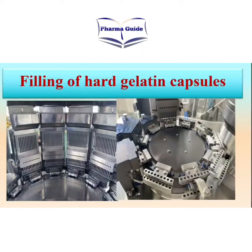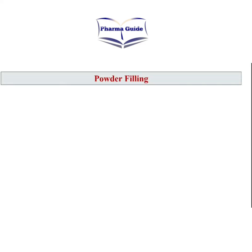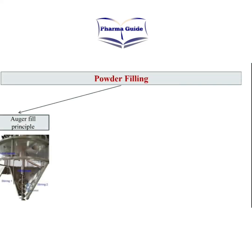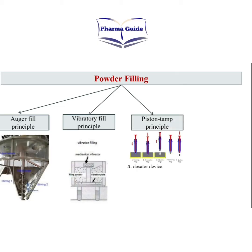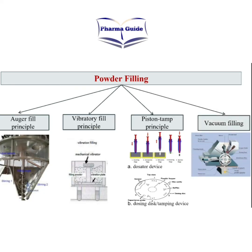Hello everyone, welcome to my channel Pharma Guide. In this video we will study about filling of hard gelatin capsules. Filling of hard gelatin capsules takes place by four principles: first is the auger fill principle, second is vibratory fill principle, third is piston tamp principle — which is of two types: dosator device and dosing disc device — and fourth is vacuum filling principle. In this video we will study about auger fill principle and vibratory fill principle.